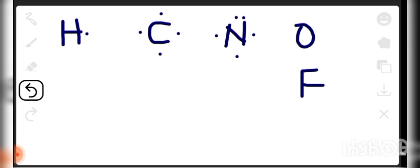For oxygen in group six, you have six valence electrons, so the dot structure will have one, two, three, four, five, six dots. For fluorine in group seven, you have seven valence electrons: one, two, three, four, five, six, seven. That is the dot structure for fluorine. Just know their valence electrons or the group they are in — that gives you their Lewis dot structure.